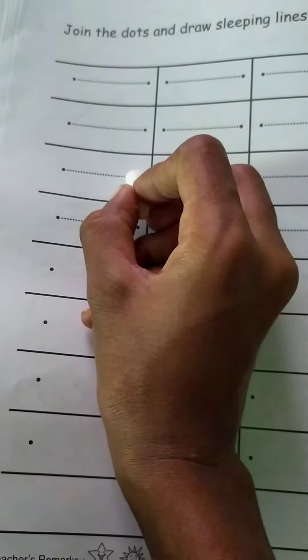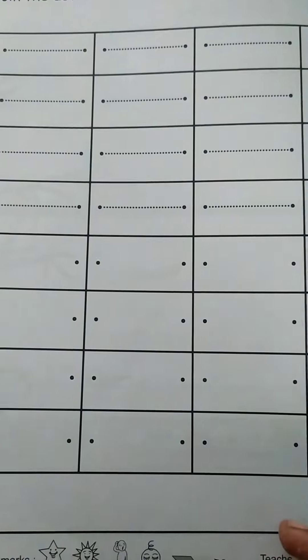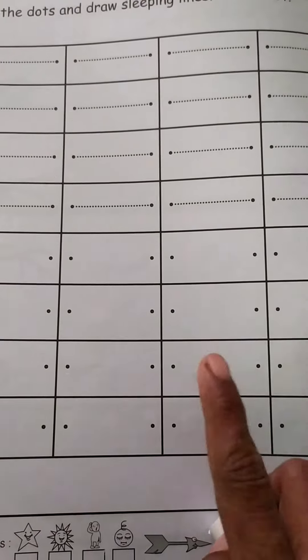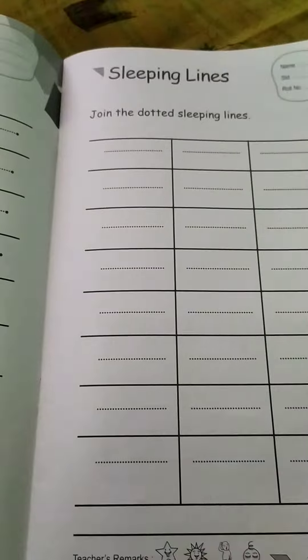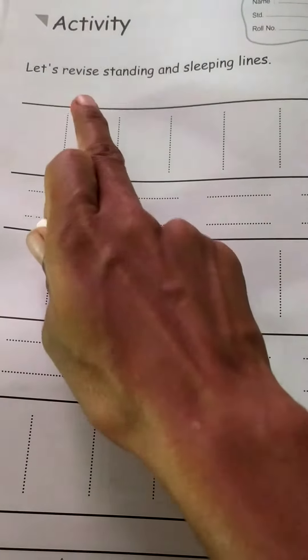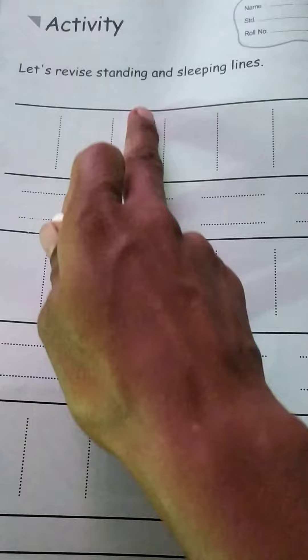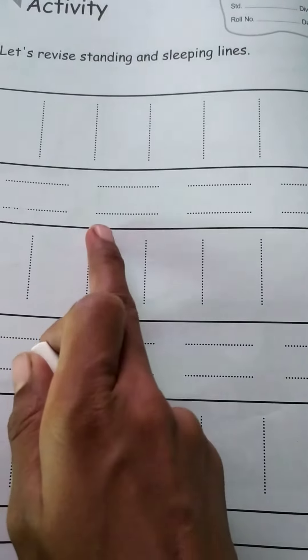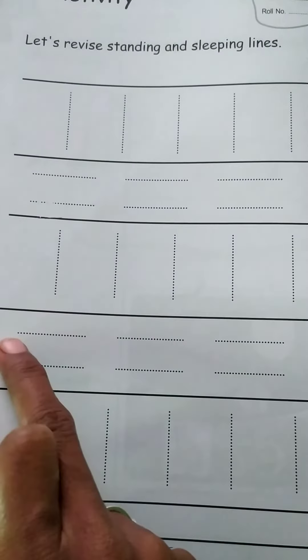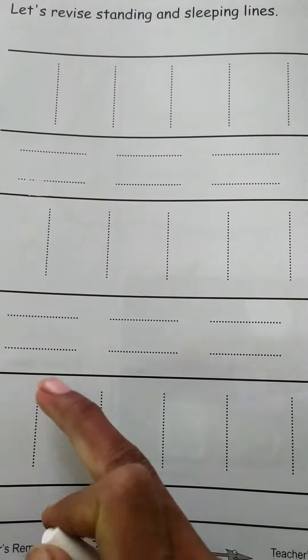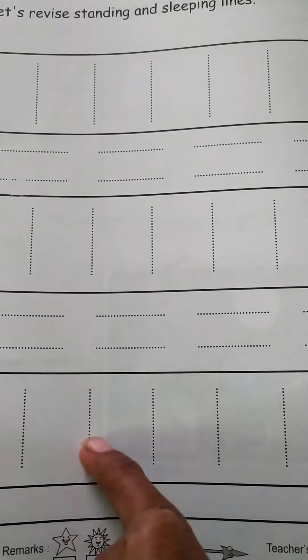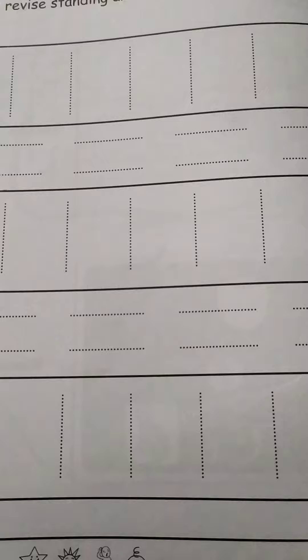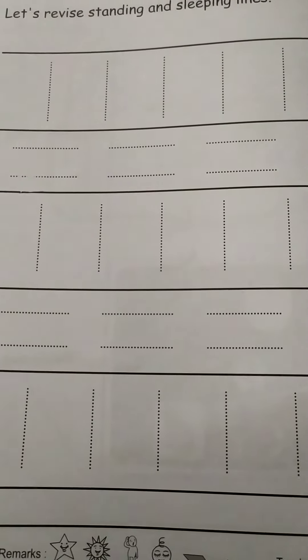Sleeping line, sleeping line. You have to draw like this — dot and write sleeping line. Students, this is your homework: sleeping line. See, this is a standing line, and this is a sleeping line. Standing line, sleeping line — okay.